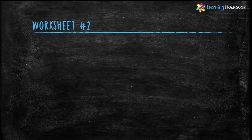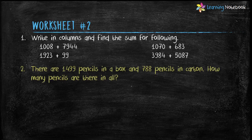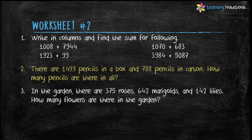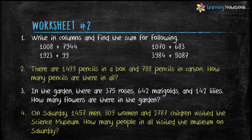I am giving you a worksheet for practice. You will find the answers to worksheet 2 in my next video. Question 1: write in columns and find the sum. Question 2: there are 1499 pencils in a box and 788 pencils in a carton — how many pencils are there in all? Question 3: in a garden there are 375 roses, 642 marigolds, and 142 lilies — how many flowers are there in total? Question 4: on Saturday, 1457 men, 309 women, and 2787 children visited the science museum — how many people in all visited the museum on Saturday?